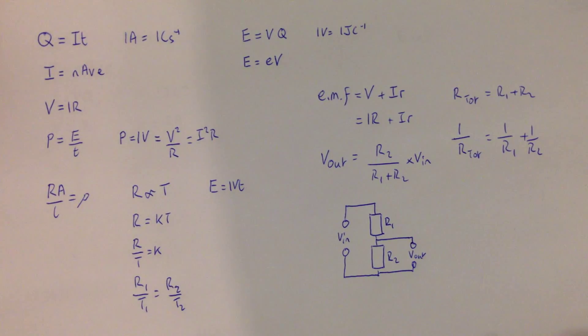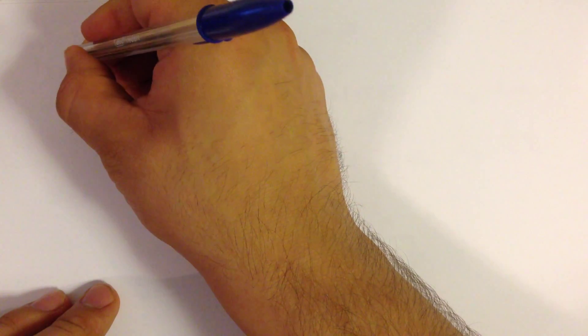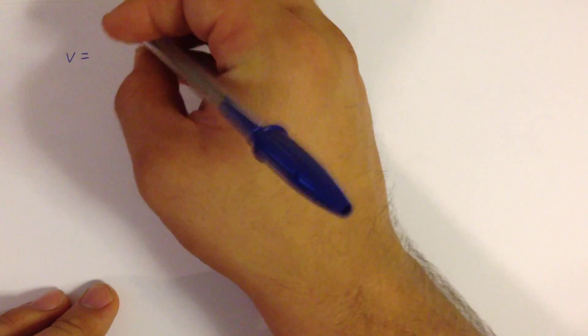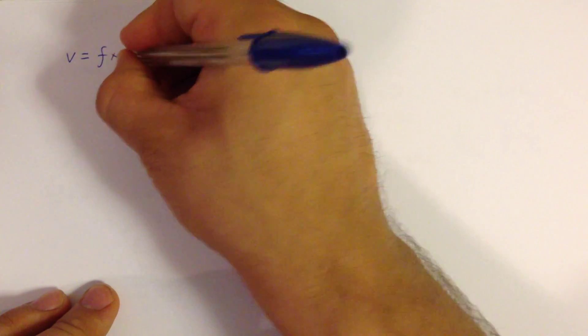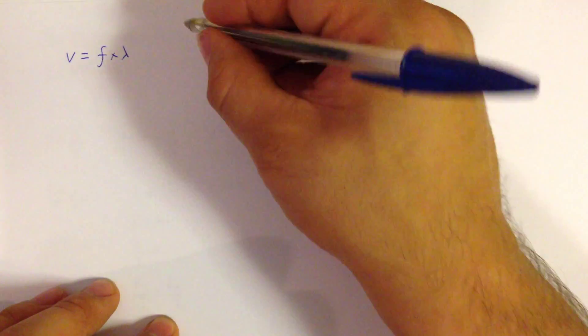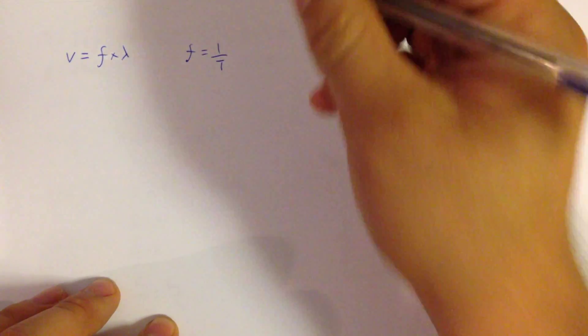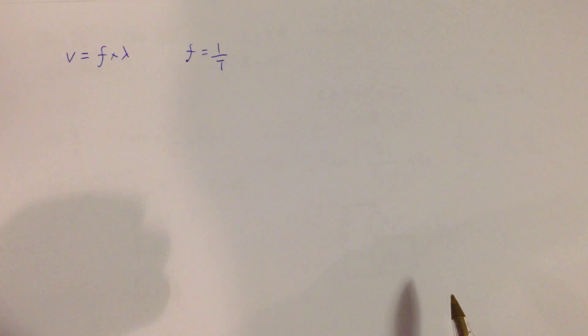All of the other equations come from module 4 and module 5 for quantum physics. So for the first wave equation, we have the wave speed is equal to the frequency multiplied by the wavelength. Now, frequency is related to the period of a wave by 1 over T, so T is the period, which is the length of one wave. Frequency is the number of waves per second.